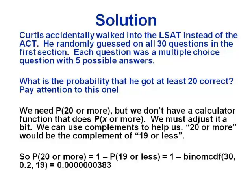To find the probability of at least 20 correct, we use complements. I want 20 or more, so the complement is 19 or less — the opposite does not include 20, since 20 is in what we want. I can find 19 or less using binomCDF. So the answer is 1 minus binomCDF(30, 0.2, 19). You can type that whole expression into your calculator. The result comes out in scientific notation, and moving the decimal point gives the final answer.